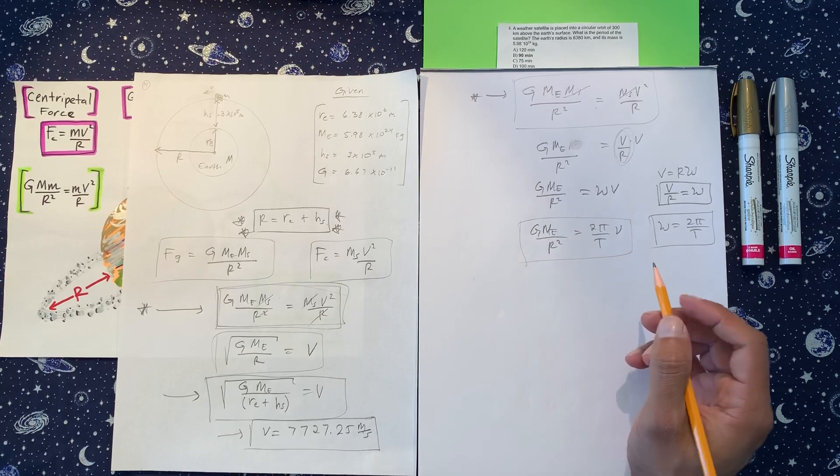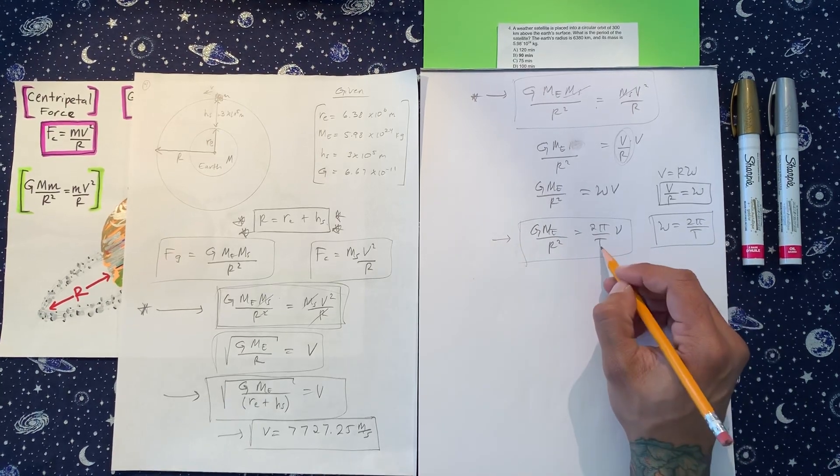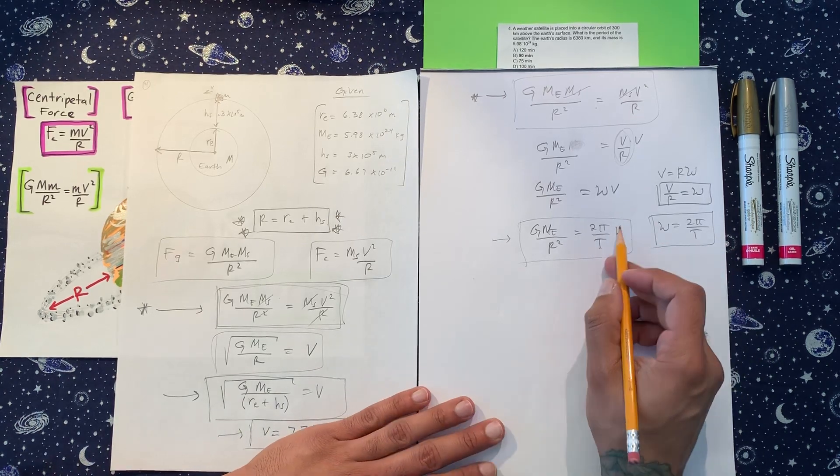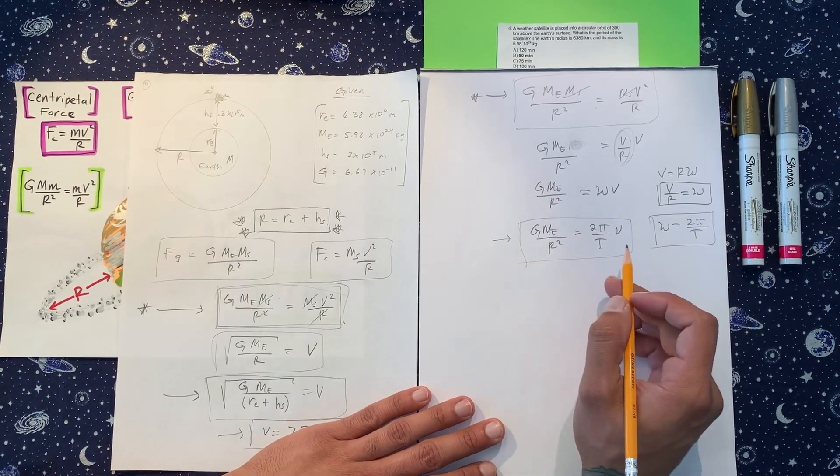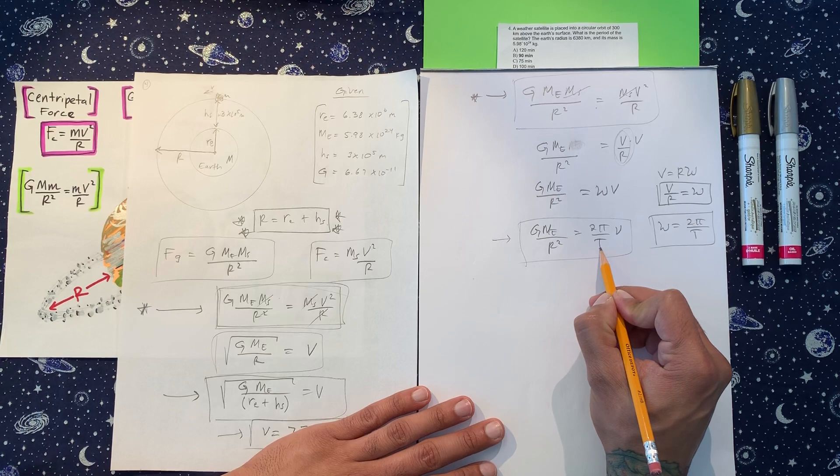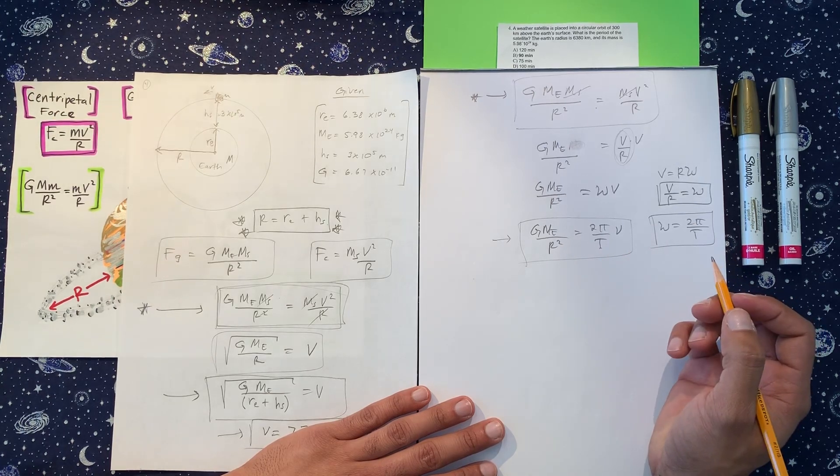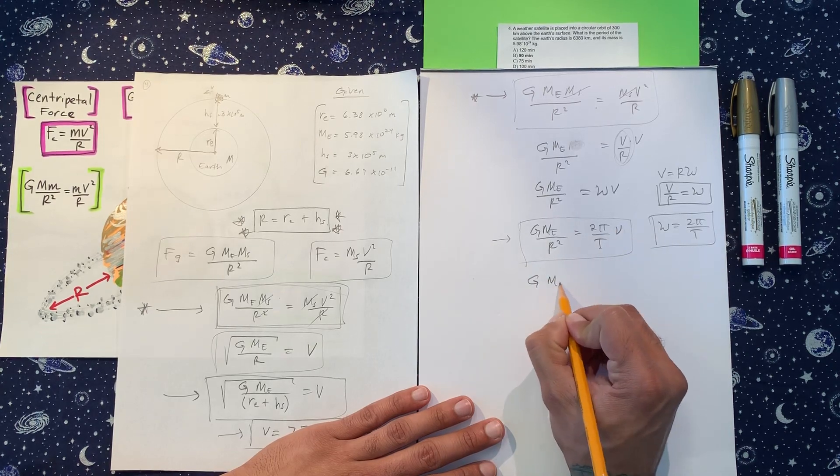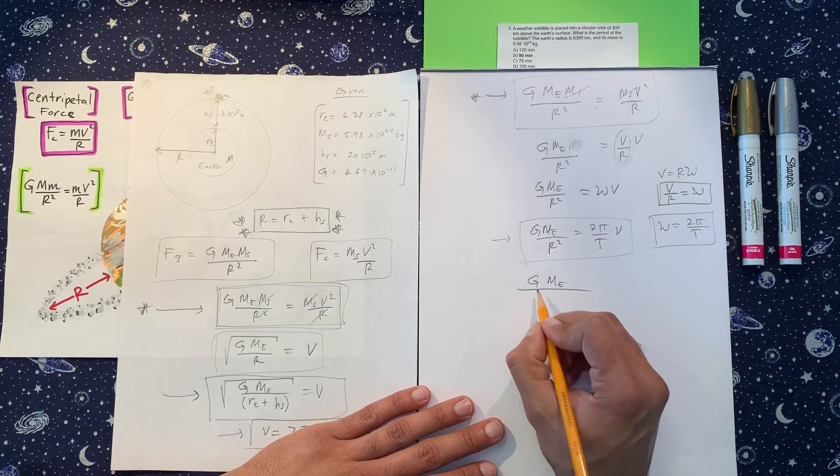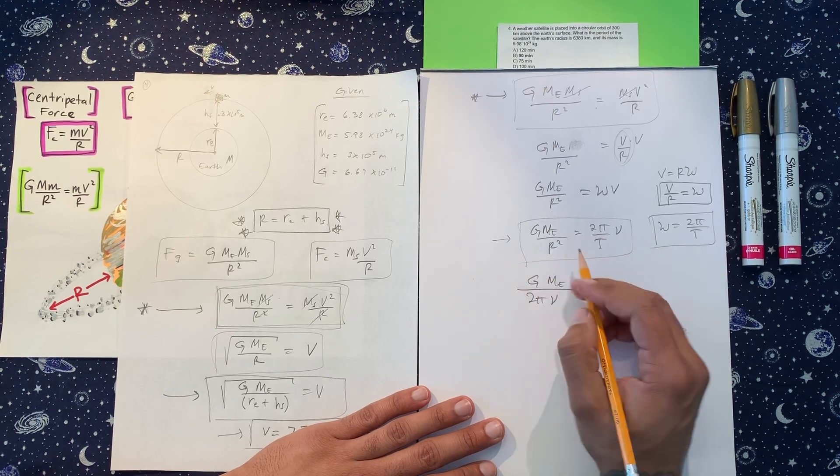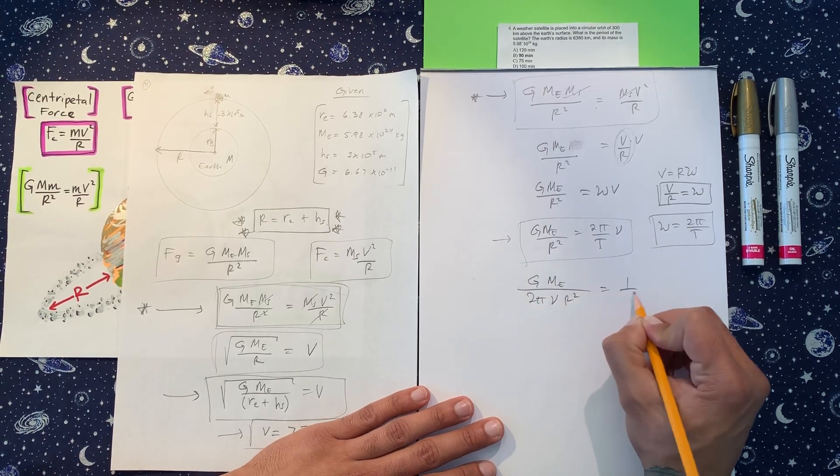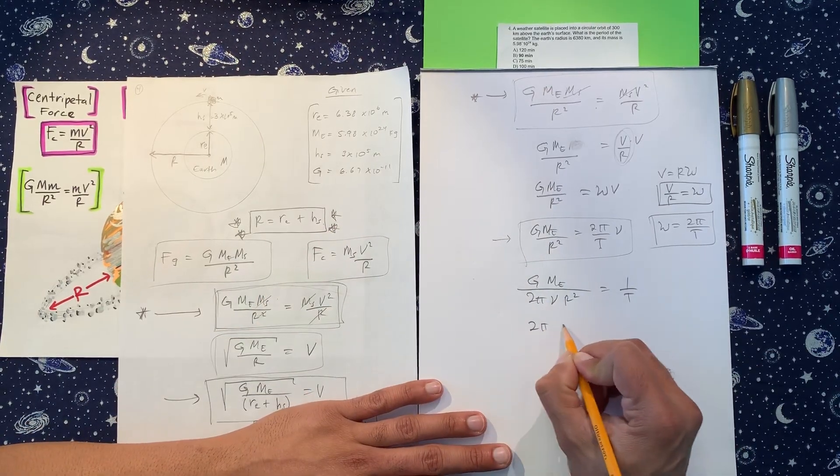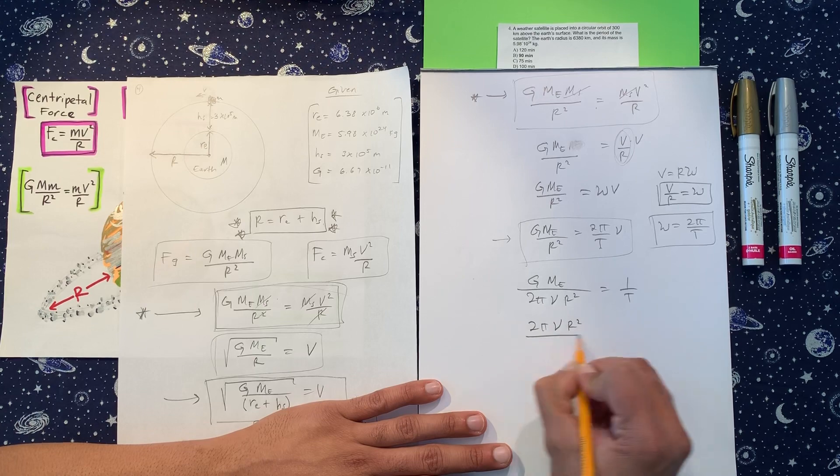So this is a good place to be because we have the value of the variable that we're looking for at the end. And all these things we have already. So let's solve for T. All right. And you can do that, however, but I like to move all this stuff up here down here. So I have two pi velocity times r squared. And this is one over T. And then I like to flip both sides.